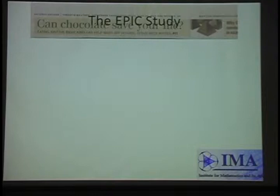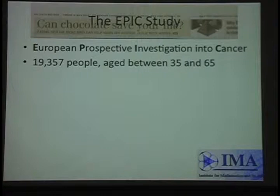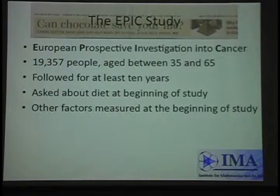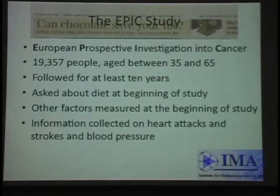They didn't look at 20 people — they looked at 20,000, all ages, followed for 10 years. They asked about diet at the beginning of the study and measured many other factors: age, gender, alcohol consumption, smoking, activity level, diabetes, and fruit and vegetable intake. They collected information over 10 years on heart attacks and strokes, and measured blood pressure. In the lingo, that's a prospective observational study. The difference? Lots more people, but much less control.